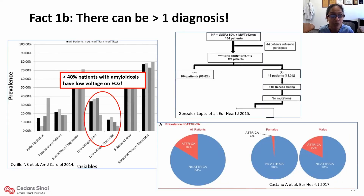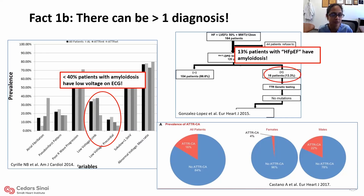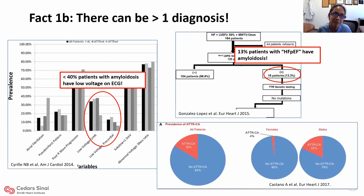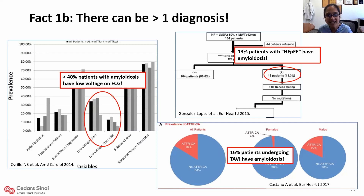Fact 1b: there can be more than one diagnosis. When you look at patients' ECG findings, less than 40% actually have classic low voltage — many just have discordant voltage. Among patients admitted with heart failure with preserved ejection fraction, increased wall thickness on echocardiogram, an amazing 13% thought to have garden-variety HFpEF actually have amyloidosis — a missed opportunity for disease-directed therapy. Similarly, 16% of patients with severe aortic stenosis undergoing transcatheter aortic valve implantation have underlying amyloidosis. If you stop at one diagnosis, you might miss the opportunity for disease-directed therapy.